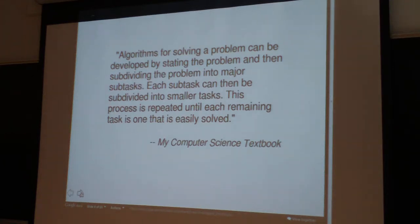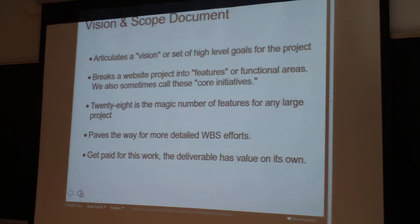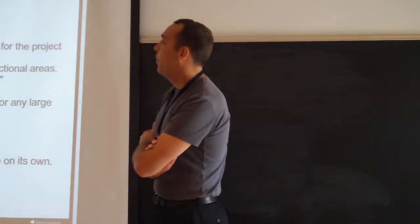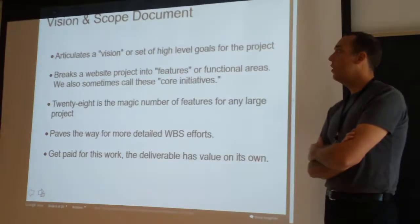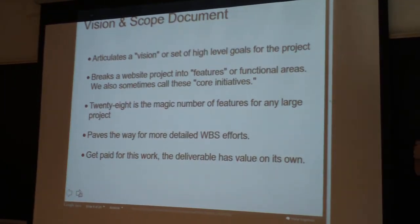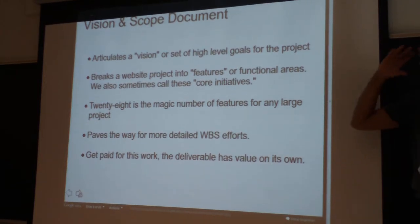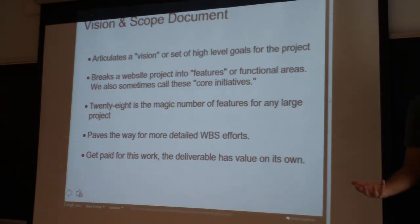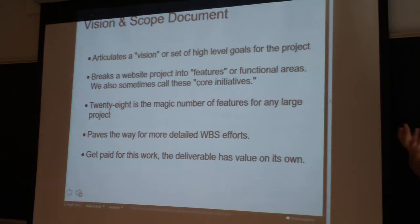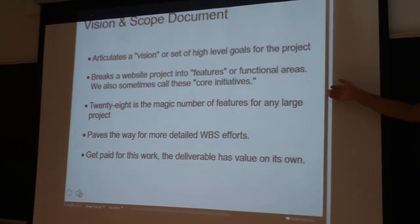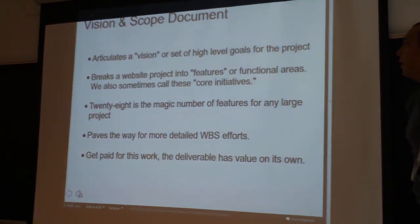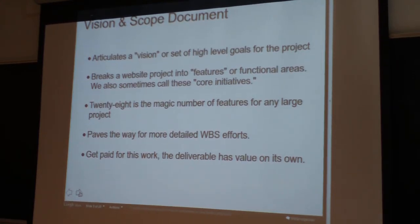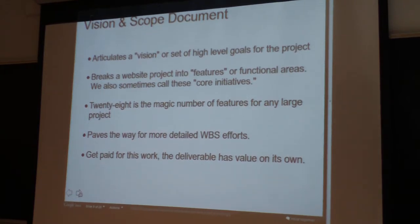Vision and scope document. This is one way in waterfall projects to start to capture requirements. Vision and scope documents are challenging. At the end of the day, this is going to give you the big picture but not all the details. However, I have done estimations off of vision and scope documents. If you're working on a project between $10,000 and $100,000, I think you can get away with just doing this kind of discovery. It articulates a vision or set of high-level goals for the project. It breaks the website project into features or functional areas. At Lullabot, we call these core initiatives.